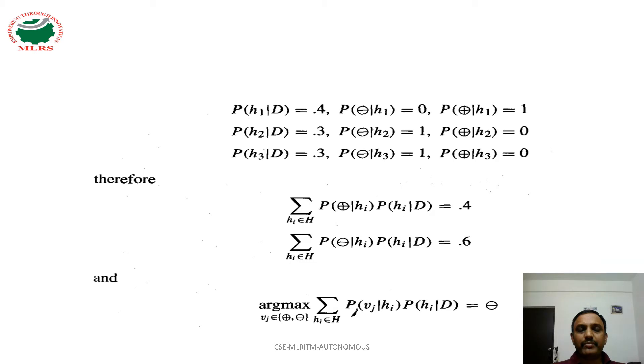The probability of hypothesis H1 on the training data D is 0.4 and this positively classifies the given new instance. And H2 and H3, probability of H2 is 0.3, probability of H3 is 0.3. These two give the negative classification on the new instance.